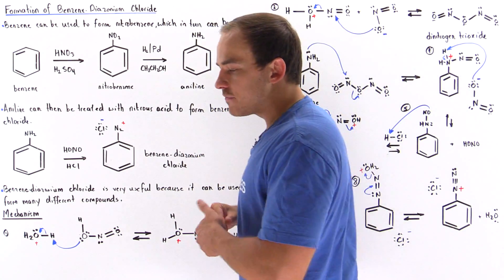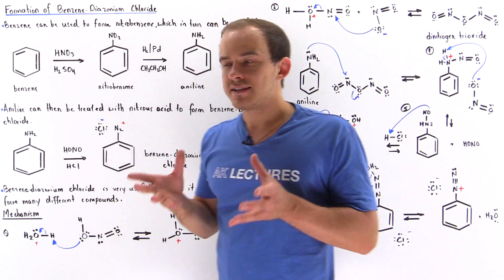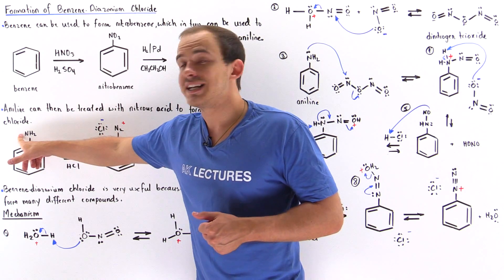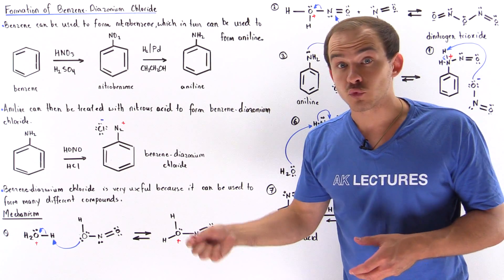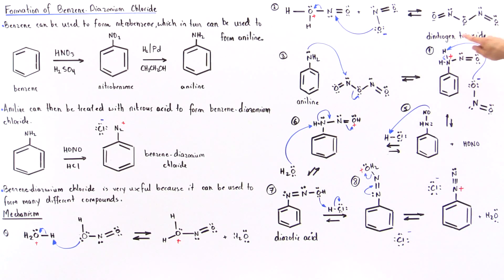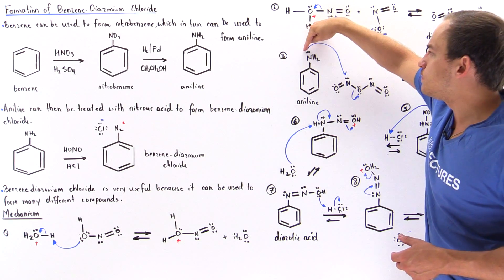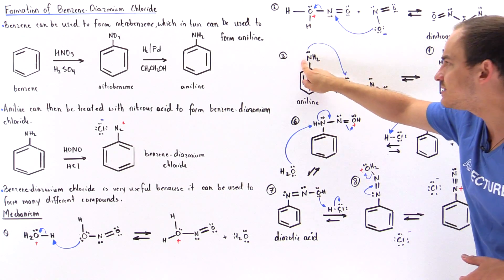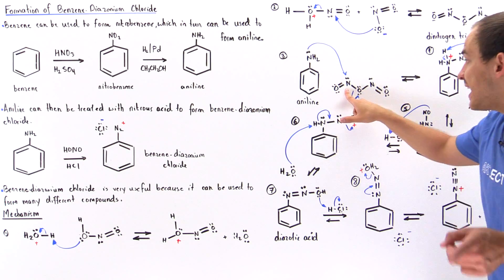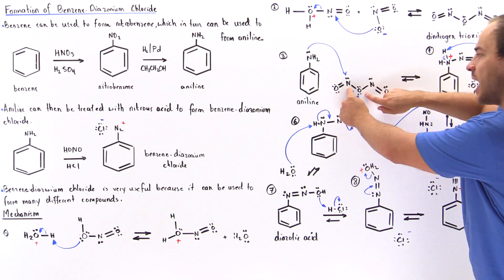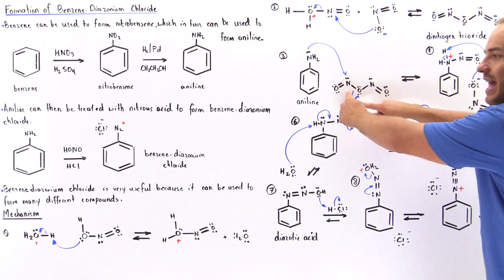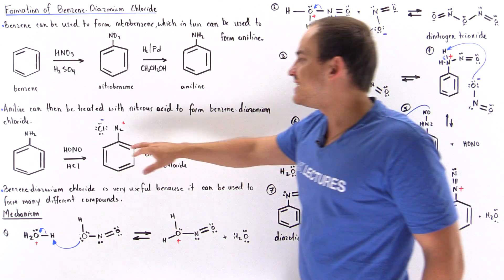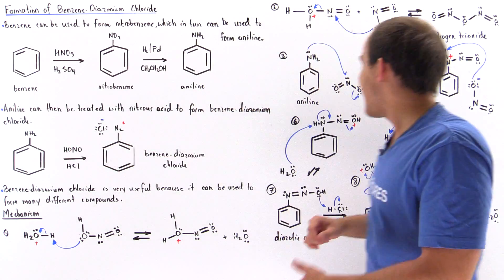In the third step, we take our aniline, and the nitrogen containing a lone pair of electrons acts as a nucleophile reacting with the dinitrogen trioxide formed in step two. This lone pair of electrons creates a bond between the nitrogen of aniline and the nitrogen of N₂O₃, displacing the bond between that nitrogen and the oxygen.